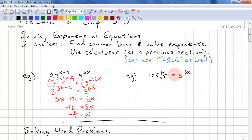Let's look at another example. 125 times root 5 equals 5 to the power of 3x. The base for 125 is 5 raised to the power of 3. And we have 5 raised to the power of a half equals 5 to the power of 3x.